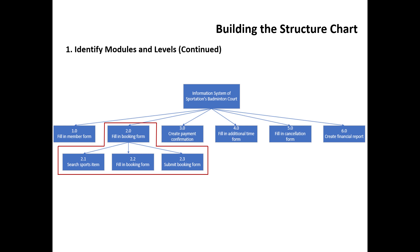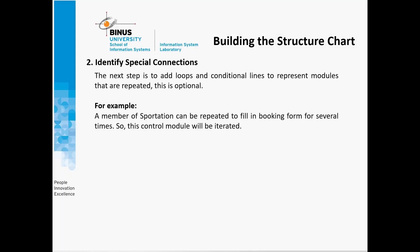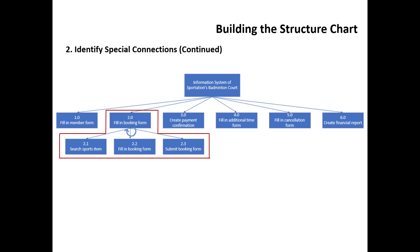The subordinate module consists of search support item, fill-in booking form, and submit booking form. The second step is to identify special connections. In this step, you add loops and conditional lines to represent modules that are repeated, though this is optional. For example, a member of the support session can repeatedly fill-in the booking form multiple times, so this control module will be iterated.